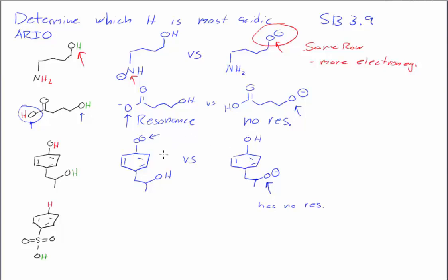However, this O minus does have resonance. You should recognize it as an allylic lone pair. Now, we can draw resonance. I'll try to use a different color here. Following these two arrows, which gets us to this resonance structure here.